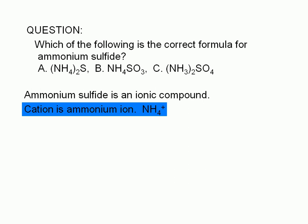At this point, we can eliminate choice C. There is no NH4 grouping in the formula given in choice C. This part of the name of an ionic compound is the name of the cation.